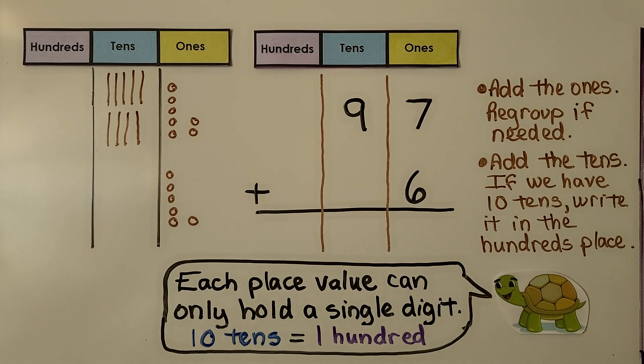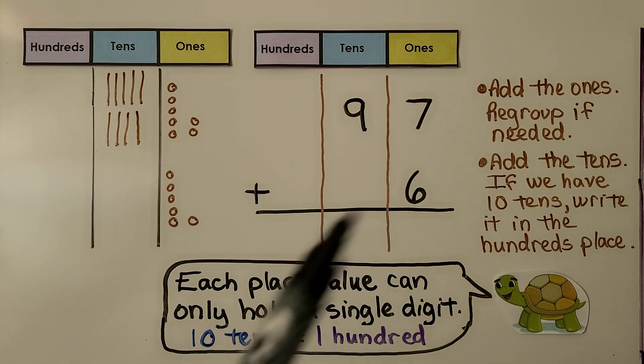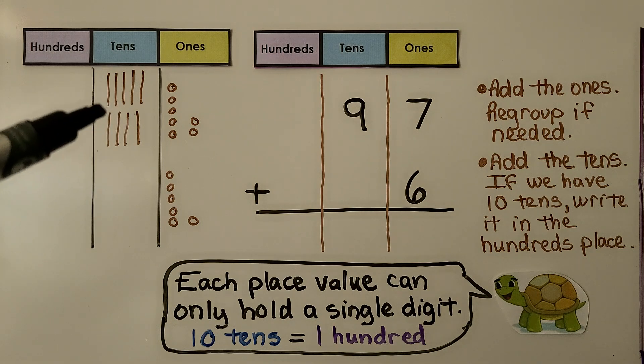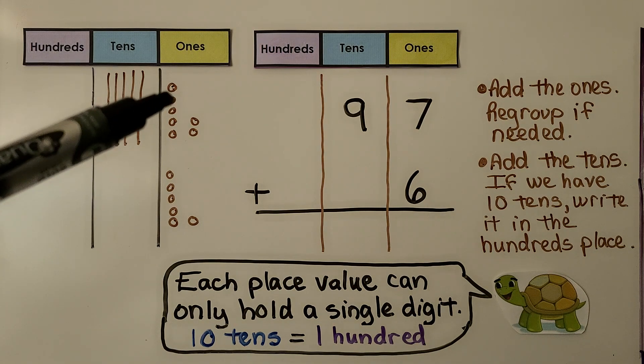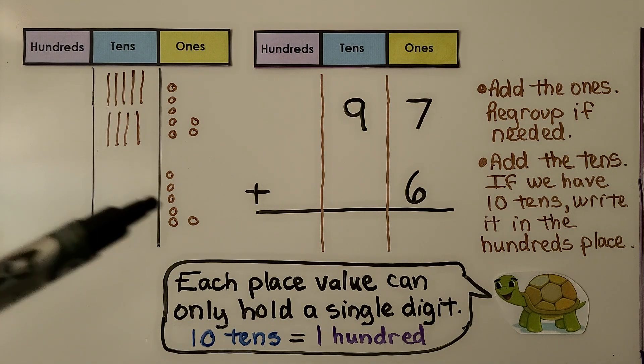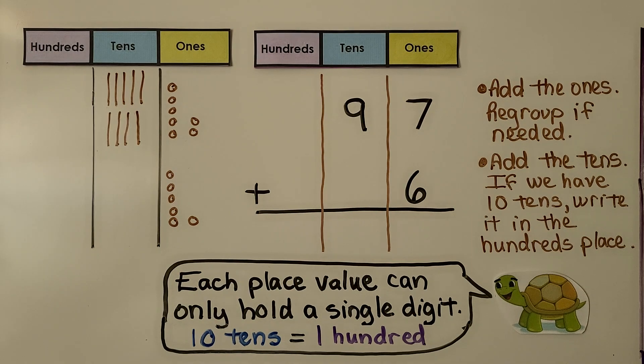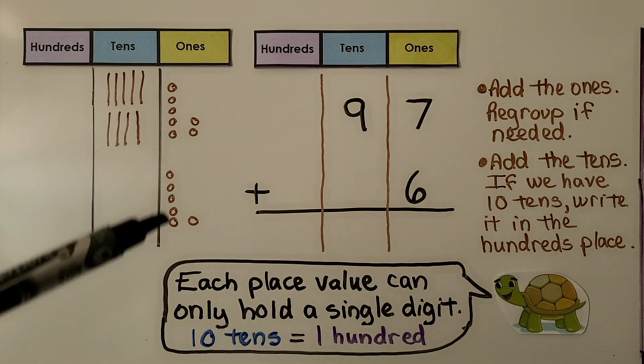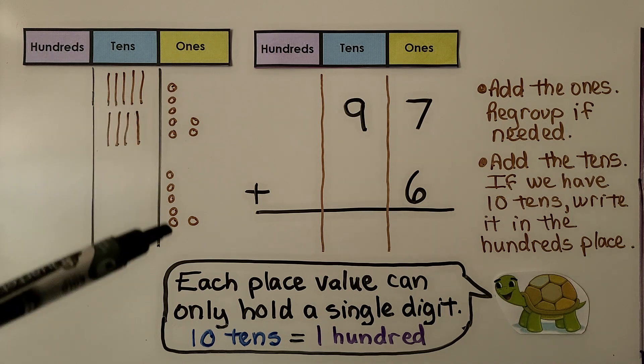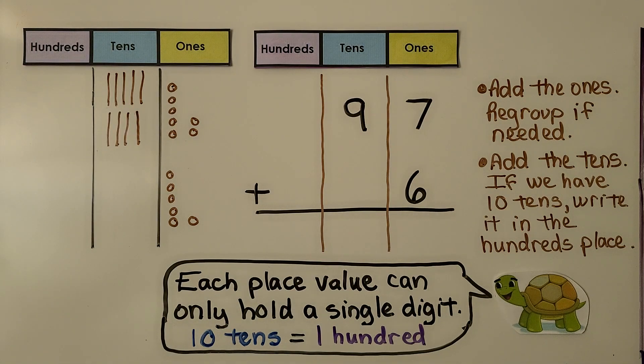This is what happens when we're modeling the problem. Ninety-seven plus six. Ninety-seven is nine tens, seven ones, and we're adding six more. We regroup if we need to. We ask ourselves if we can make a ten from ten ones, and we can.